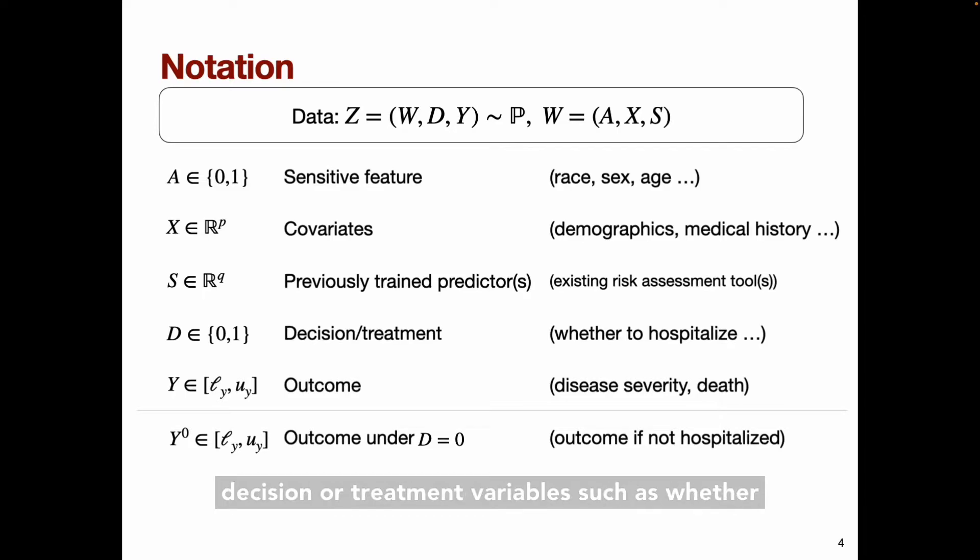D is a binary decision or treatment variable, such as whether to hospitalize a patient. Y is a real-valued outcome of interest, such as a marker of health or disease severity, or a binary variable, such as patient mortality, death. And Y0 is the potential outcome that would be observed if, possibly contrary to fact, the decision variable were set to zero. For example, Y0 could be a patient's health outcome if they're not hospitalized. The key challenge is that we only get to observe this for patients who are not hospitalized. For everyone else, this outcome remains counterfactual. This is going to motivate the use of causal inference techniques.